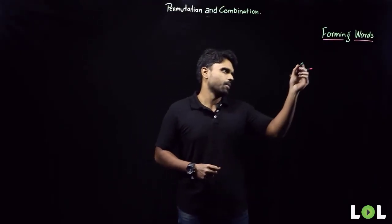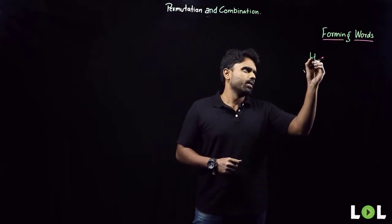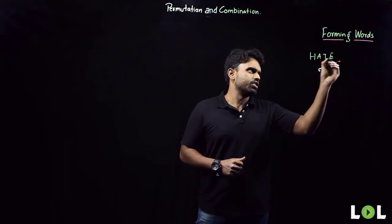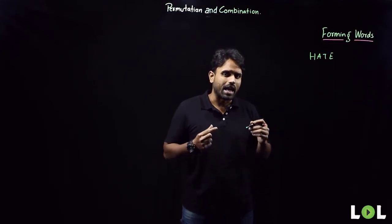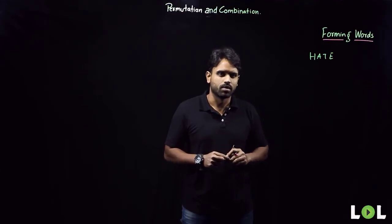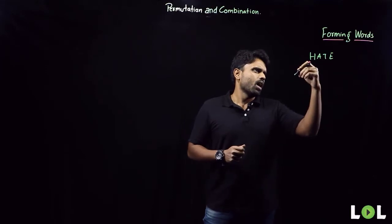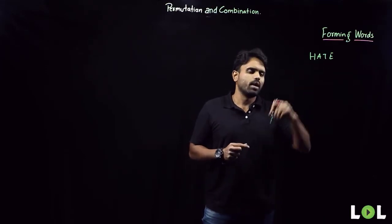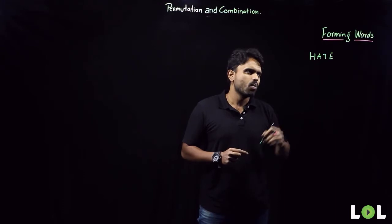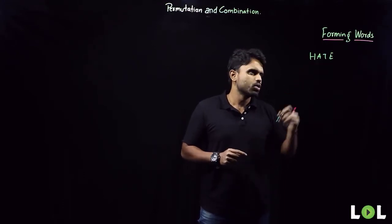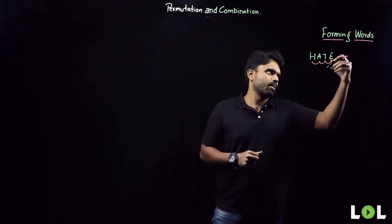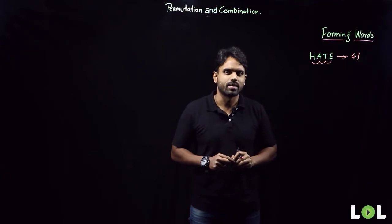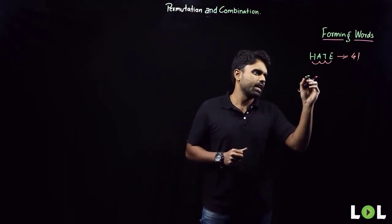Let's start with forming words. The question will be something like: in how many different ways can the word HATE be arranged? The one rule we have to follow is that not every word has to make a meaning. Now, how many letters do we have? Four letters — it is nothing but a question about four people and four chairs. So four letters can be arranged in four factorial ways.